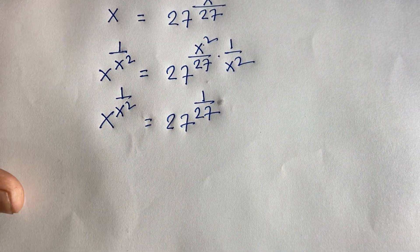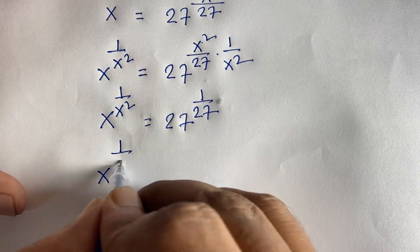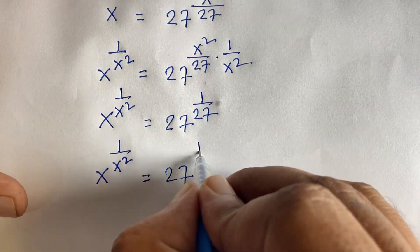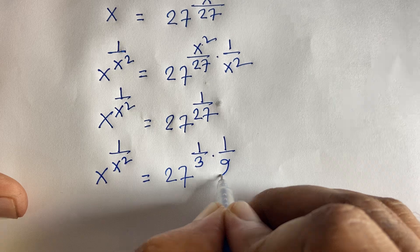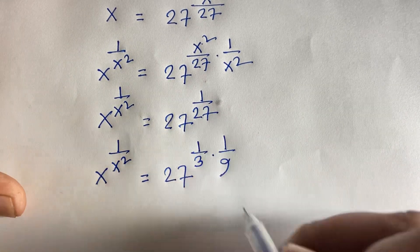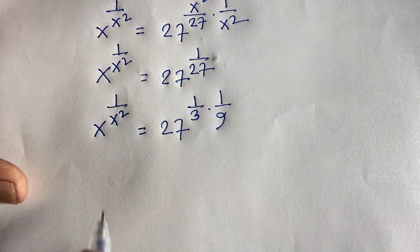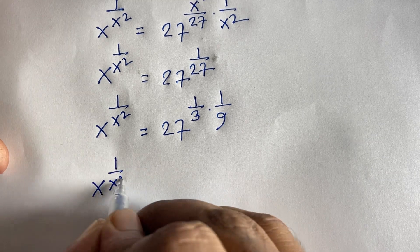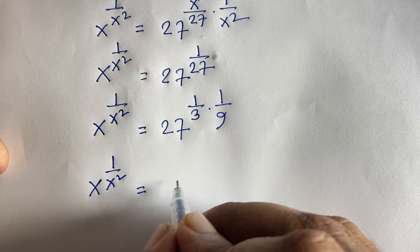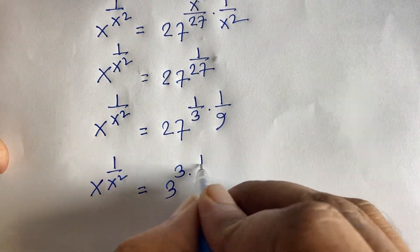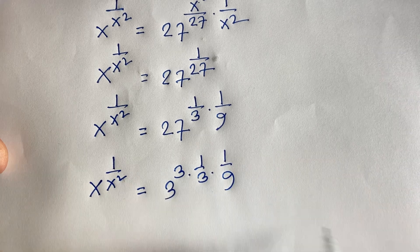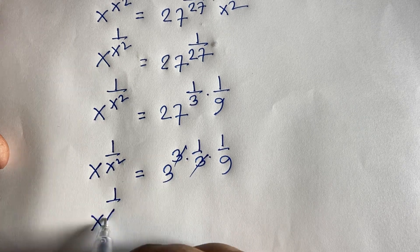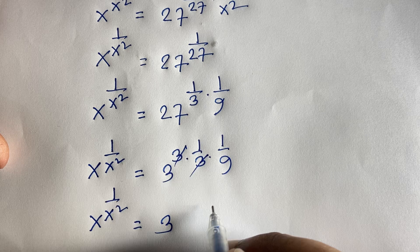Now in this expression, 1 over 27 can be written as 1 over 3 times 1 over 9, and 3 times 9 equals 27. So x to the power 1 over x squared, and 27 equals 3 to the power 3. Here is 1 over 3 times 1 over 9, and these cancel. We will find out x to the power 1 over x squared is equal to 3 to the power 1 over 9, which is 1 over 3 to the power 2.